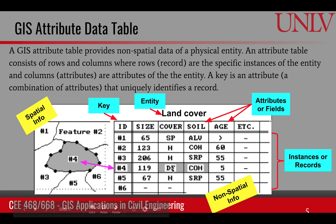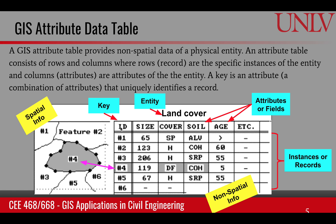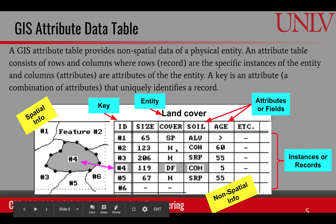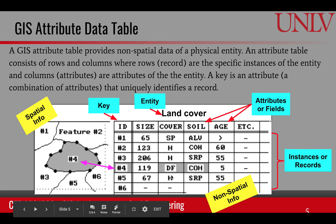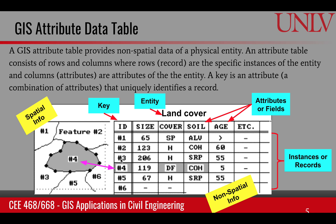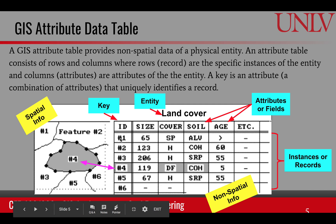Whenever we create an attribute table, there must be one key attribute which uniquely identifies a row. In this case, instances 2, 3, and 5 have the same land cover, so using land cover to find a particular polygon would be impossible. However, the ID is unique for every row. In ArcGIS, the system automatically creates an FID to ensure that each row has a key that can be used to find that row using that unique value — in this case, the ID.